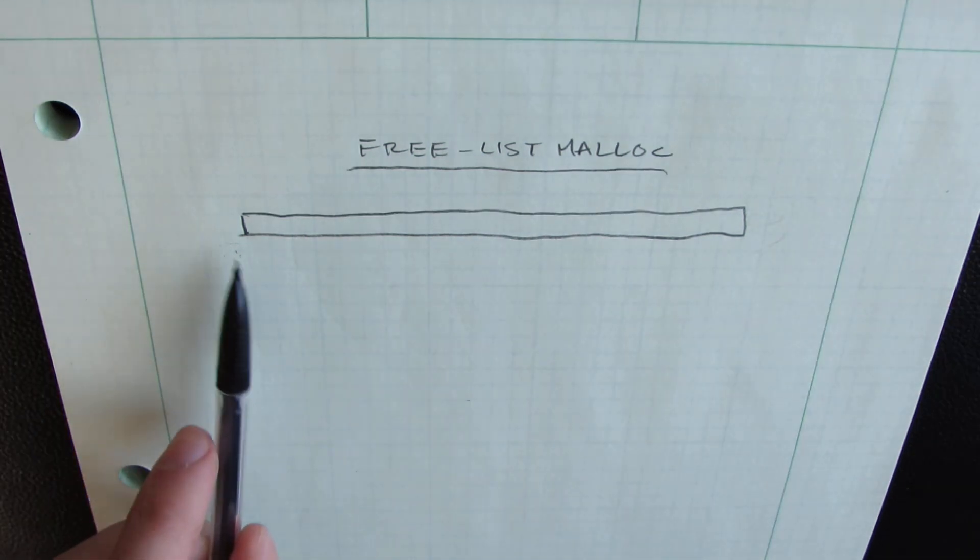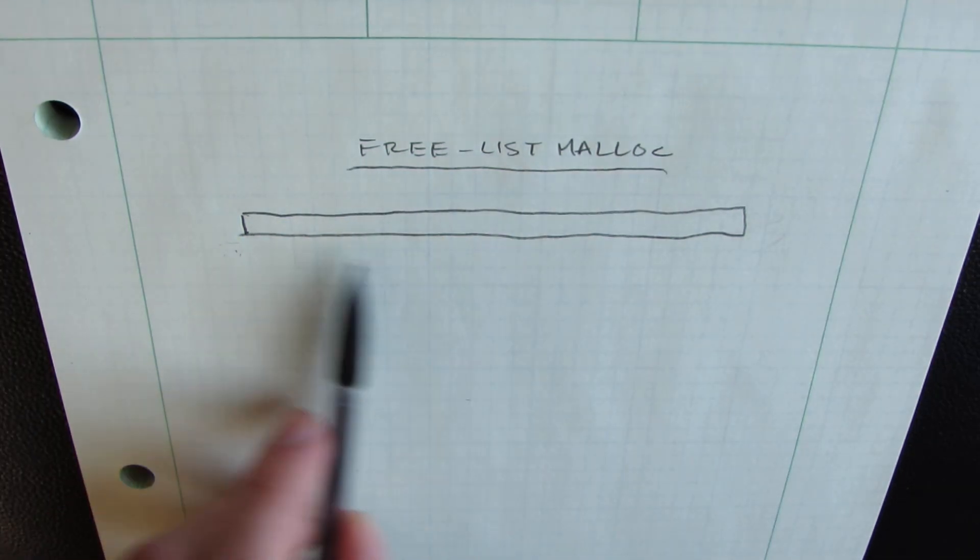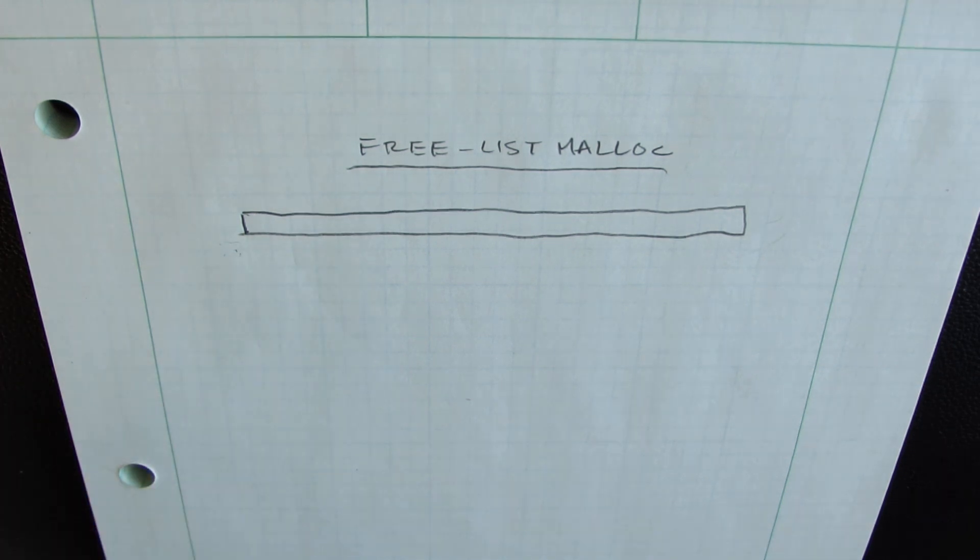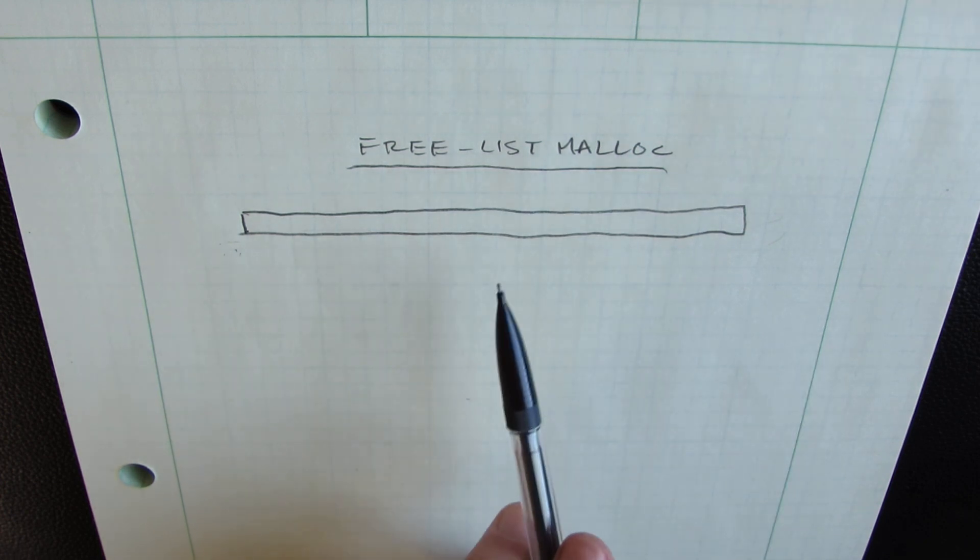Now imagine that we have a large chunk of memory, and this memory represents our heap. At first this heap is empty, as in there's no allocations being used here.